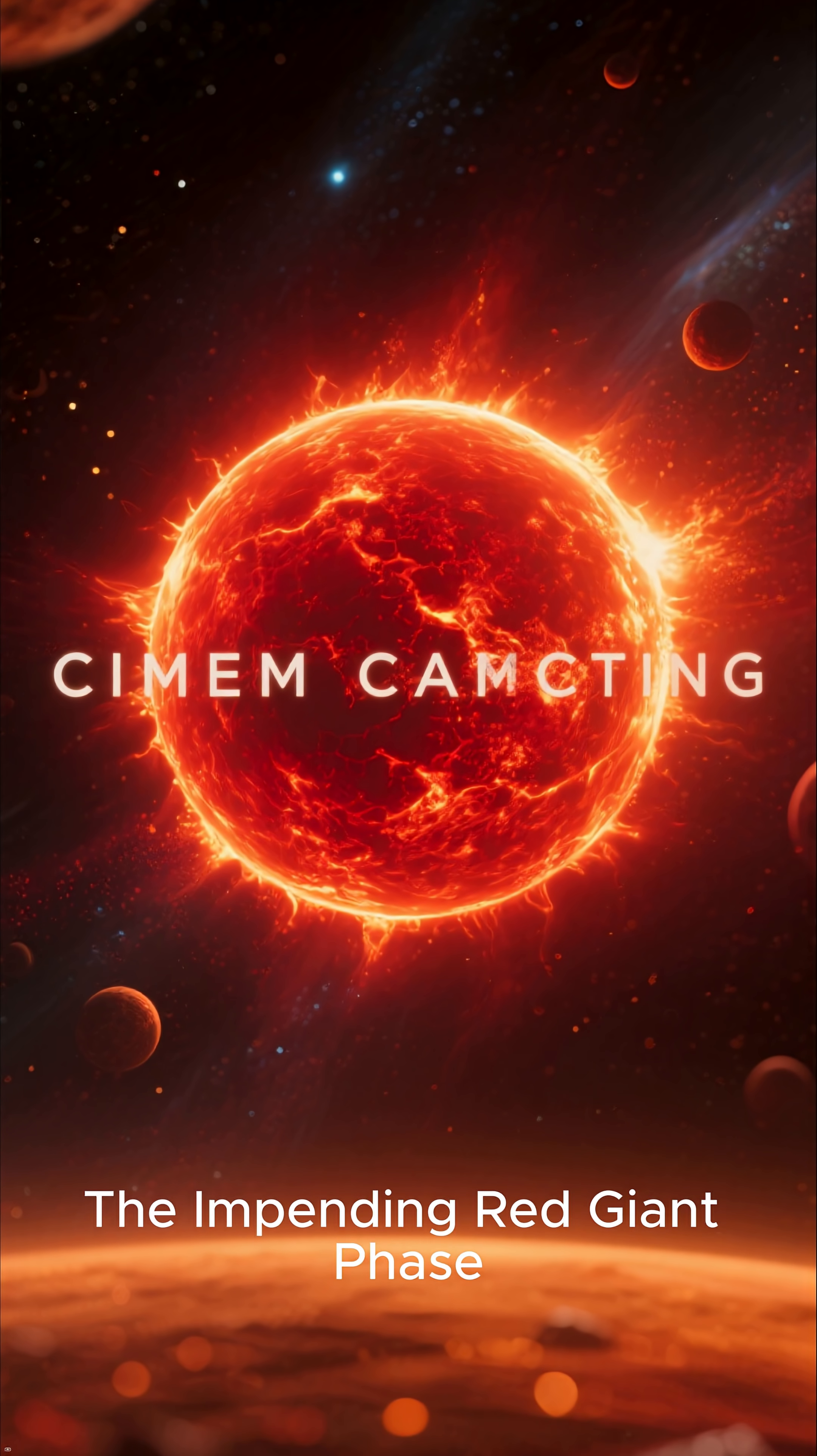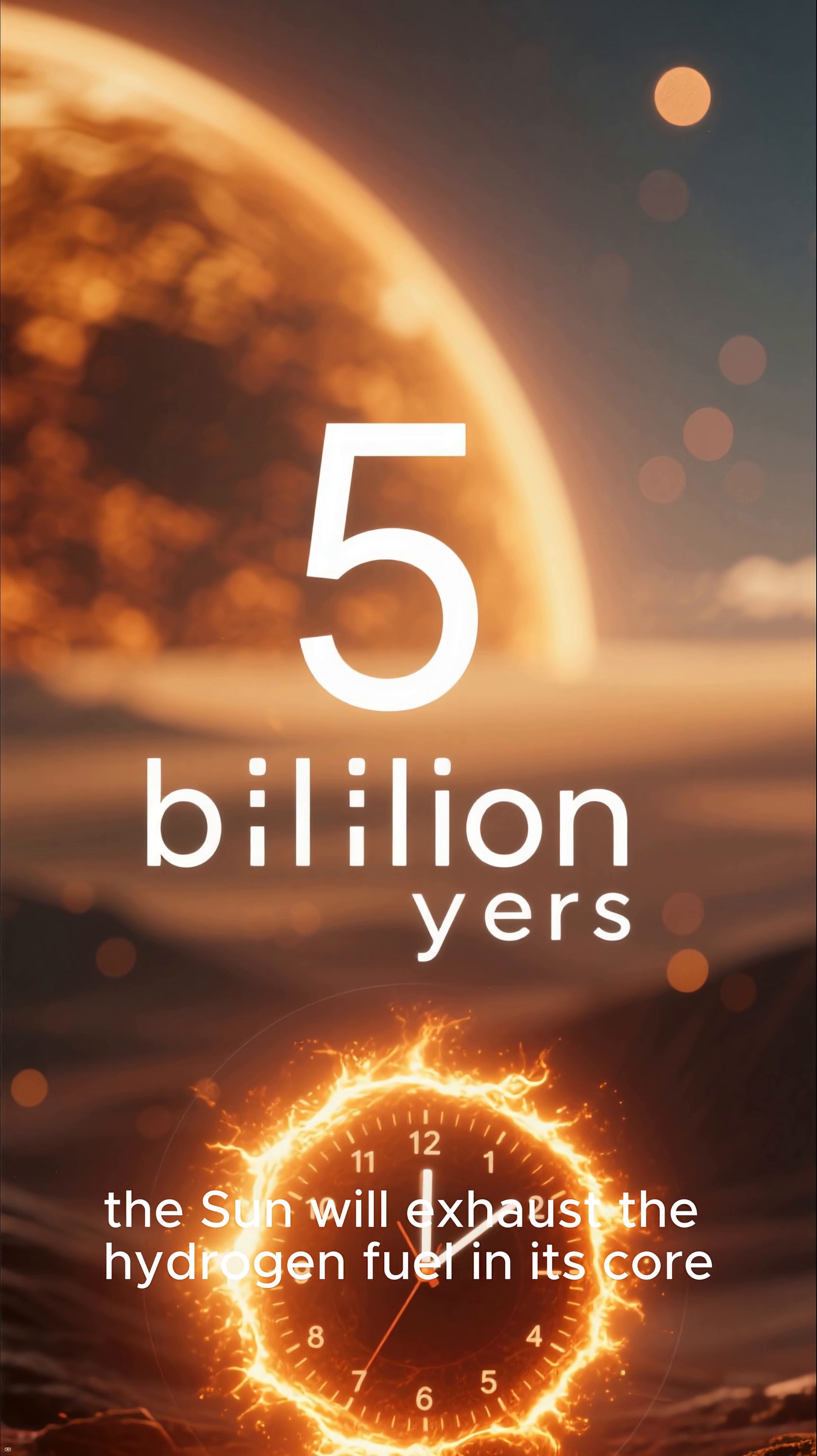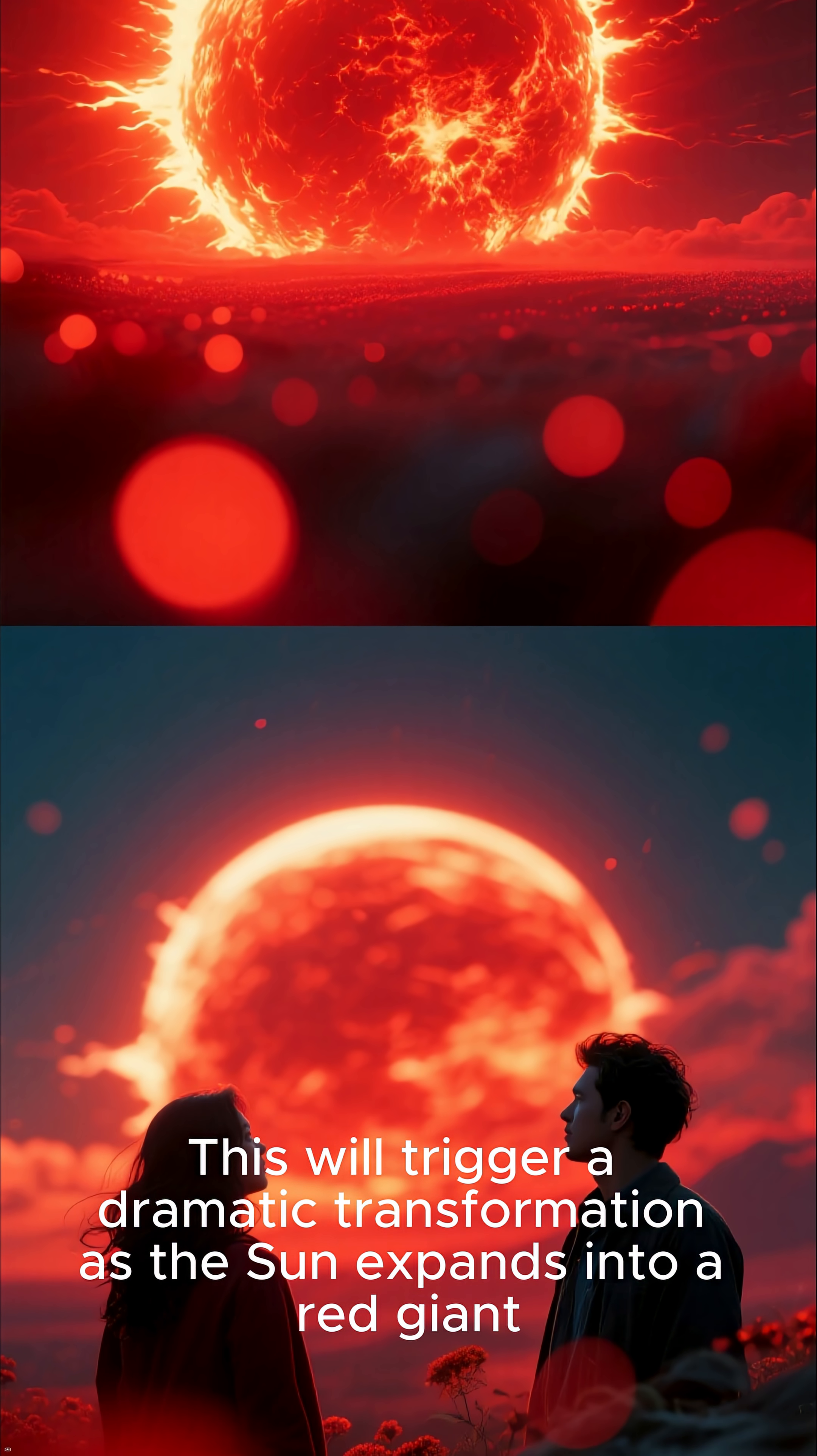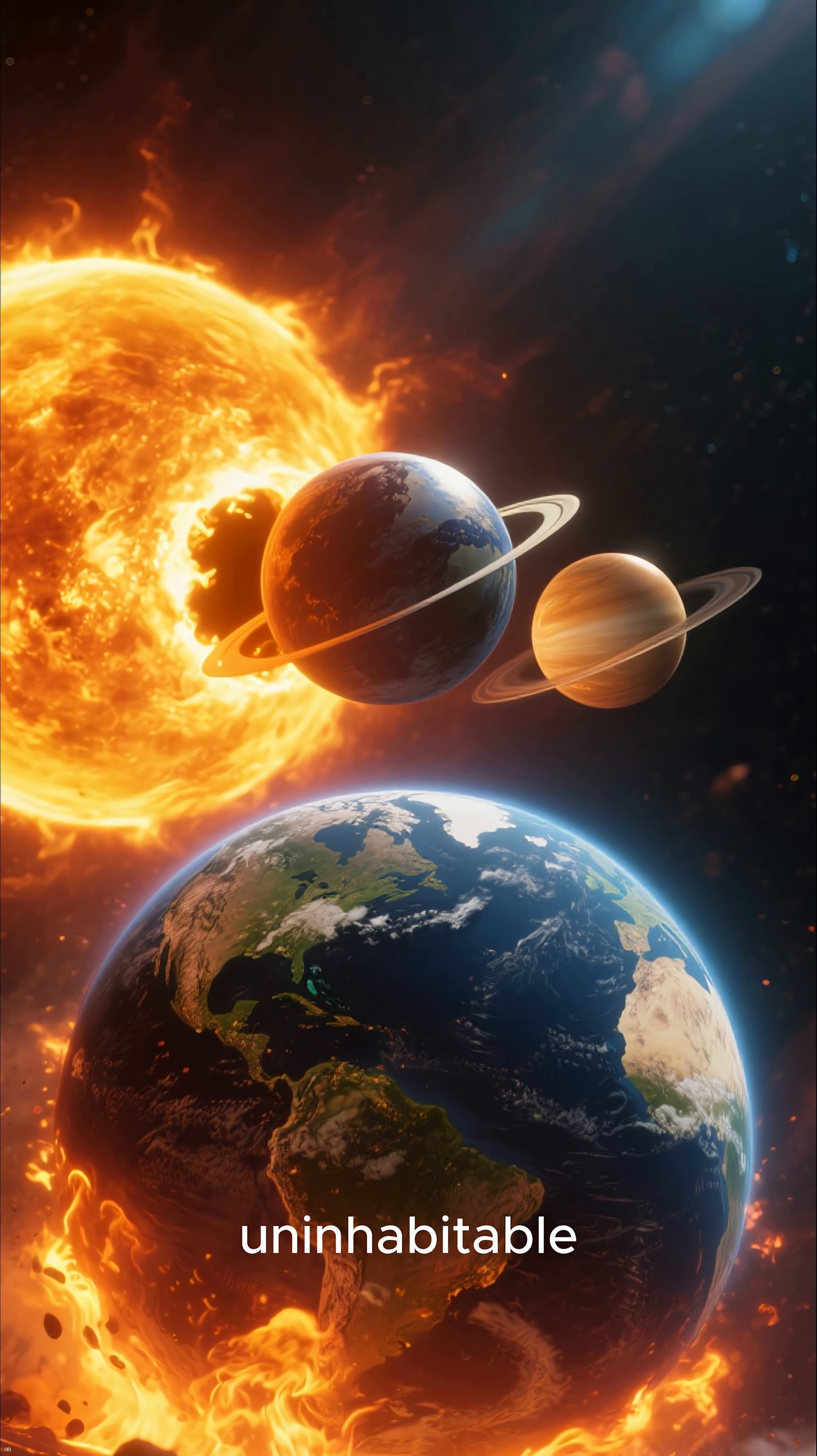The impending red giant phase. Let's look towards the future. In roughly 5 billion years, the sun will exhaust the hydrogen fuel in its core. This will trigger a dramatic transformation as the sun expands into a red giant. During this phase, it will engulf Mercury and Venus, and likely render Earth uninhabitable.